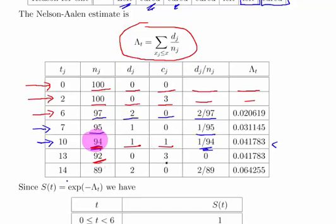Between day 13 and day 14, three people leave the study. Nothing really happens in terms of people being cured, so this value doesn't get updated. Start of day 14, we have 89 people, two get cured, nobody leaves the study, giving us 2 over 89. That means our updated lambda value is 0.064255.